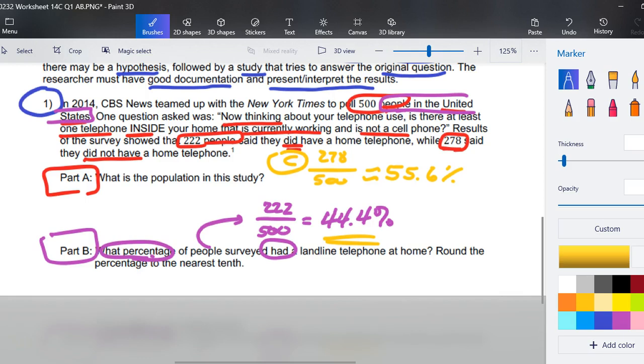Question D says, what questions do you think that the researchers at CBS News and the New York Times were trying to answer? It appears one thing is they were asking what percentage of the people in the United States have a landline phone at home?